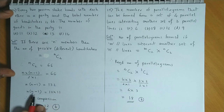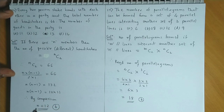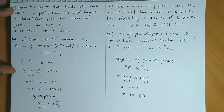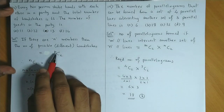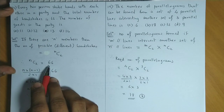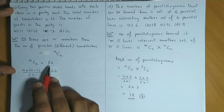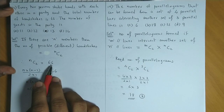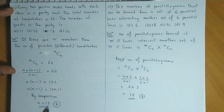By comparison on both sides, we can say n is equal to 12. So the answer is option B. Remember: the number of selections equals the number of handshakes, and the selection is two persons at a time. So nC2 = 66, and solving this equation we get n = 12.